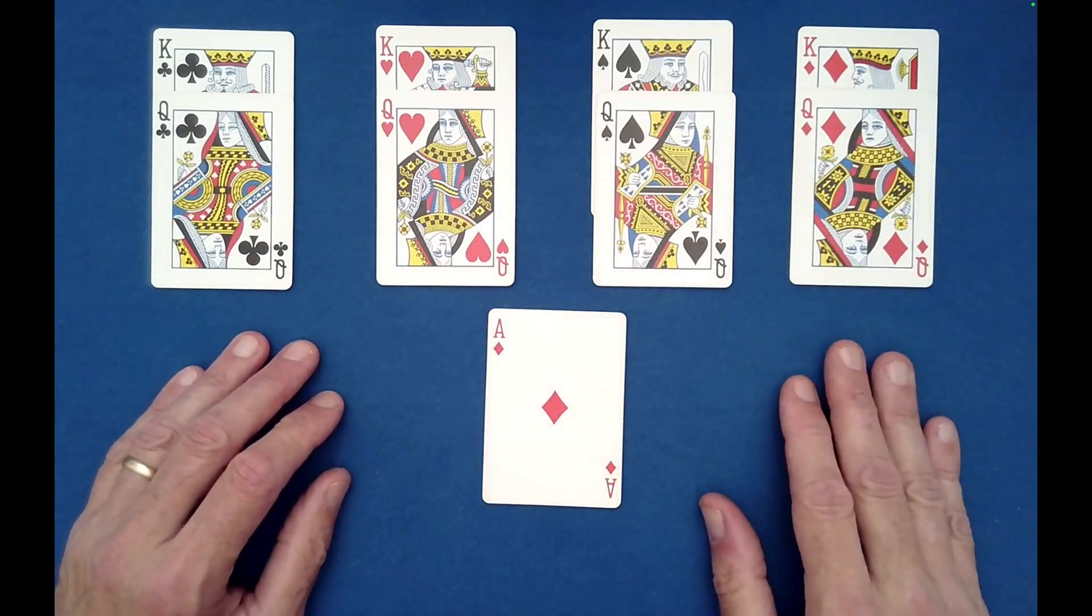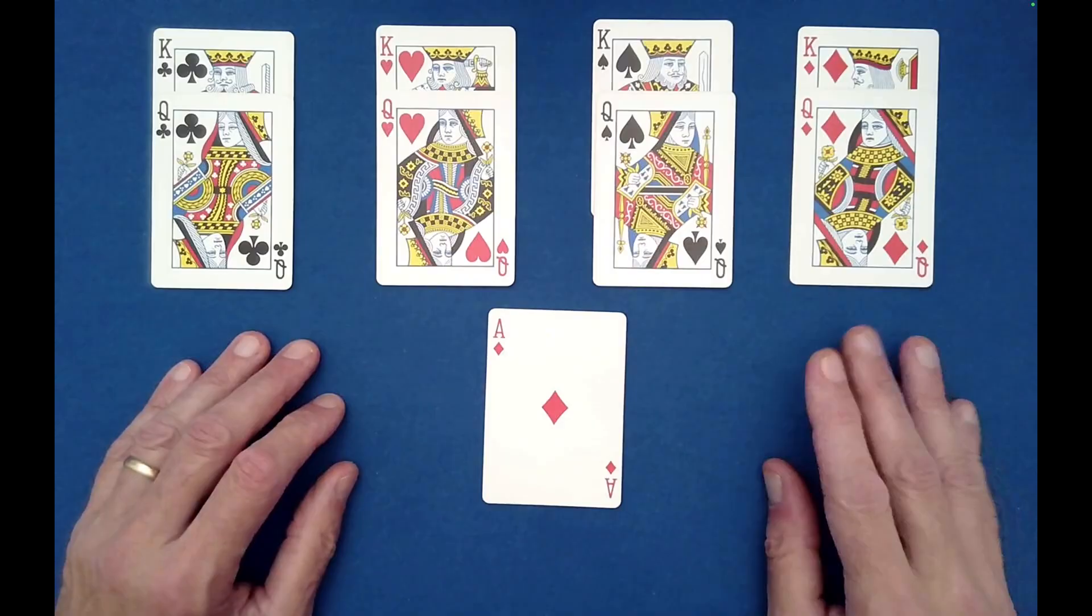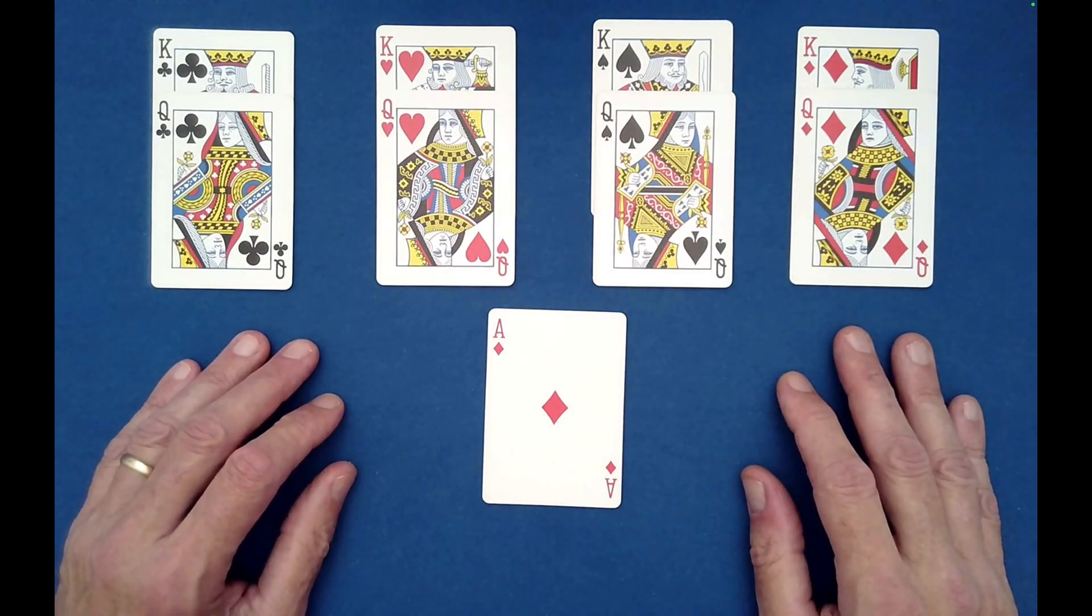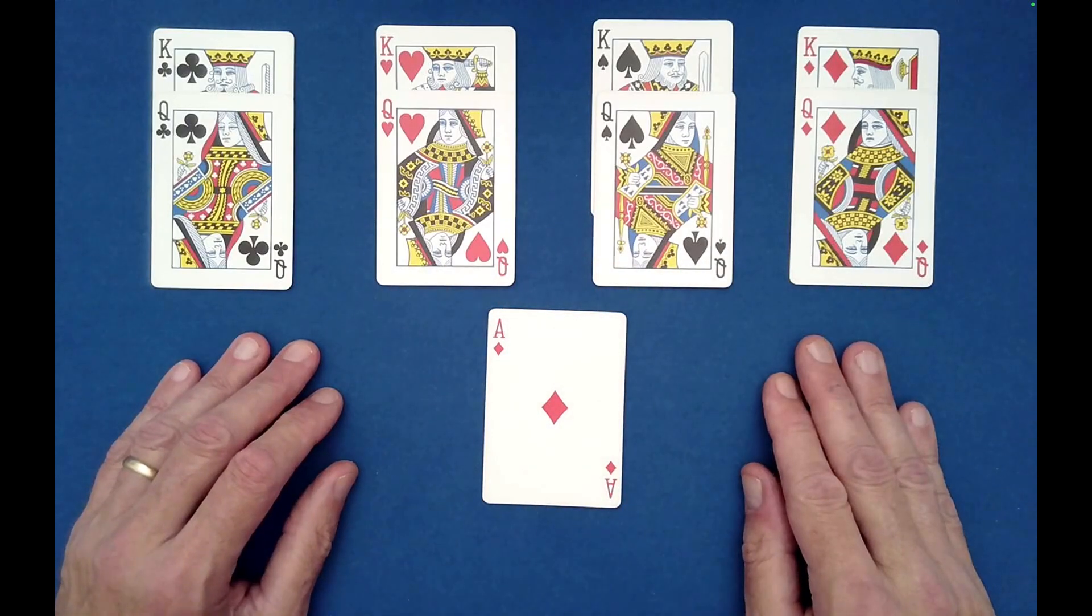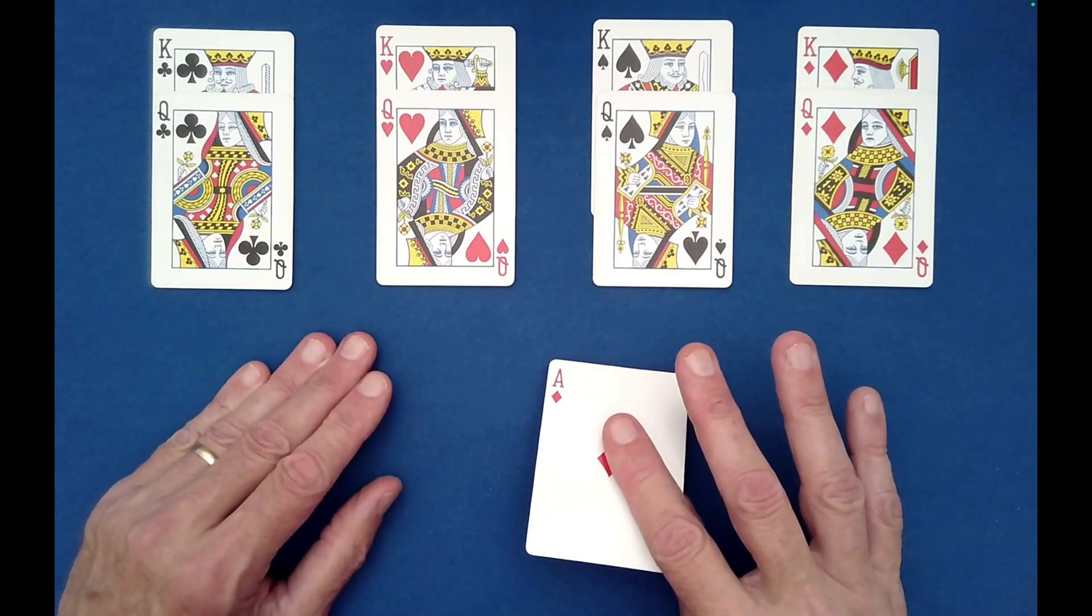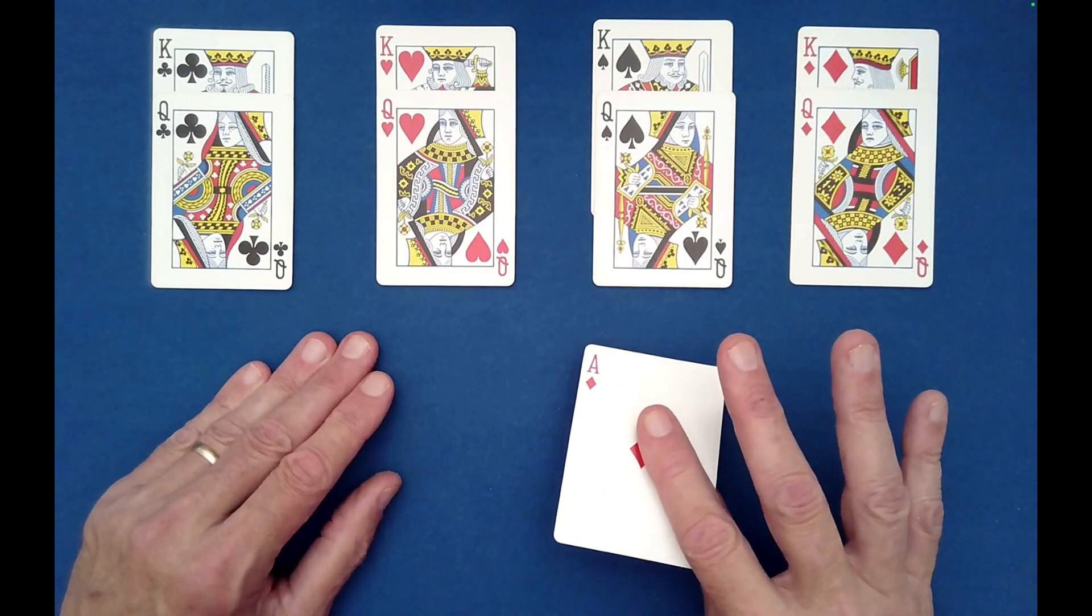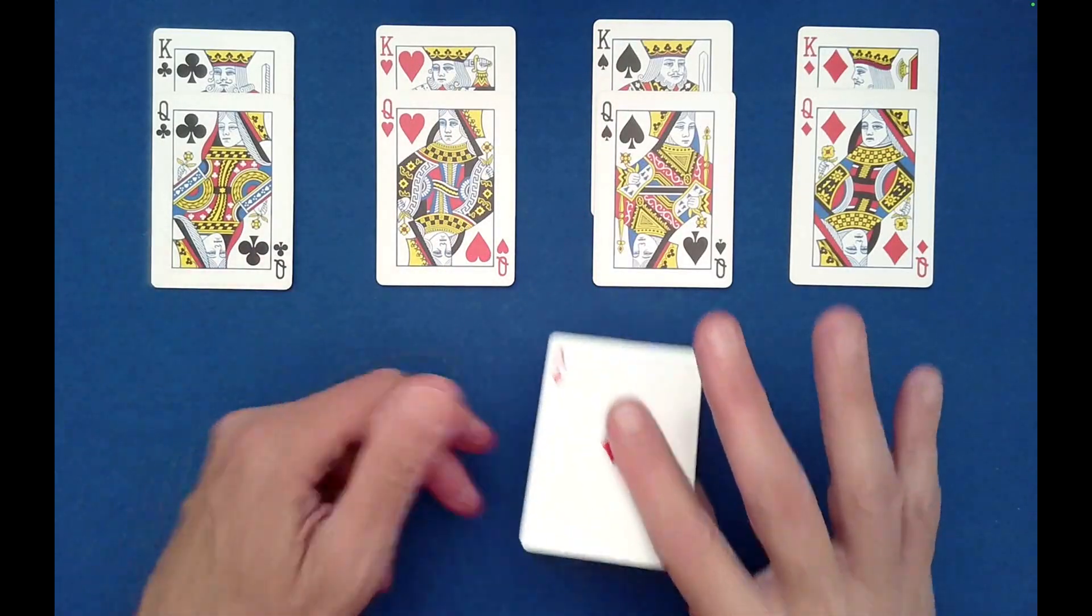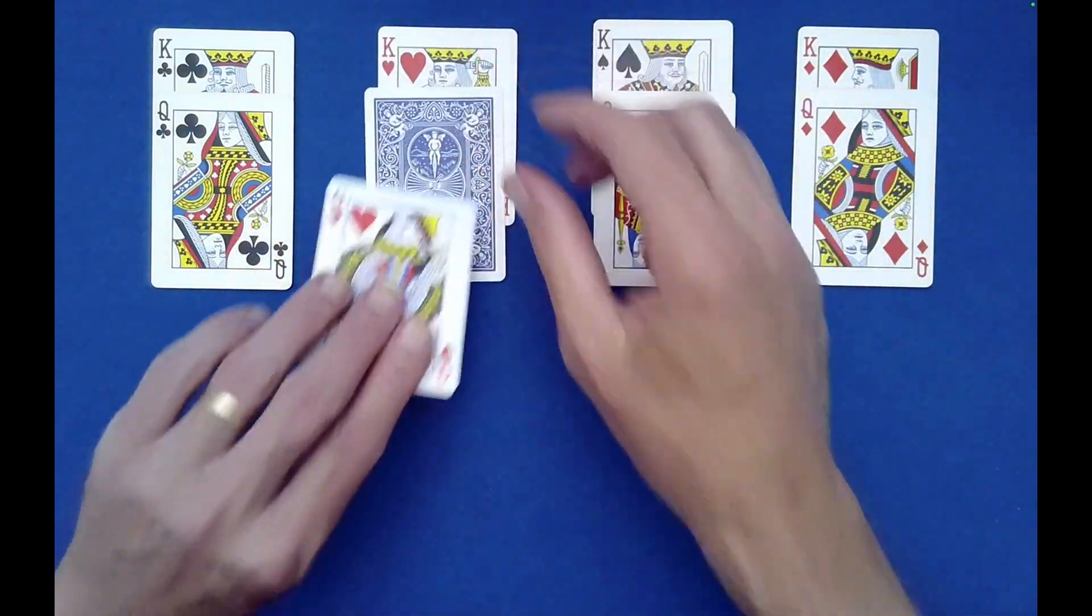So what you need the spectator to do, there's some things they'll need to do with your back turned as the performer. The spectator needs to secretly decide on one of the royalty pairs. Let me just show you what they need to do. Imagine your back is turned and this is the spectator doing the next few steps. What the spectator is being asked to do is select a pair. Maybe they'll choose the hearts, but they don't tell you. Have them place this ace face down between the king and queen like that.